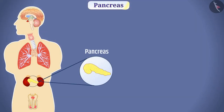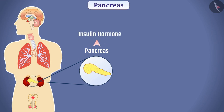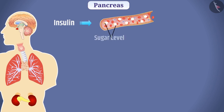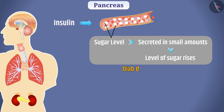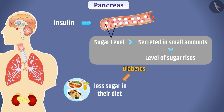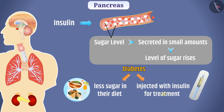The pancreas is present behind the stomach and secretes insulin hormone. Insulin helps in controlling the sugar level in the blood. If insulin is secreted in small amounts, the level of sugar in the blood rises, causing a disease called diabetes. Diabetes patients take less sugar in their diet and are injected with insulin for treatment.